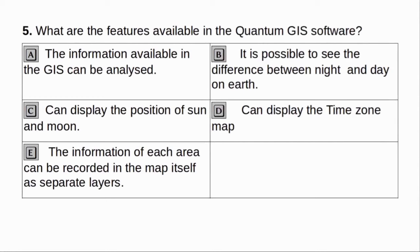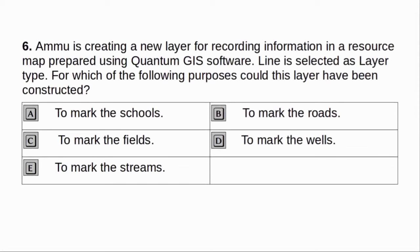What are the features available in the Quantum GIS software? A. The information available in the GIS can be analysed. B. It is possible to see the difference between night and day on Earth. C. Can display the position of sun and moon. D. Can display the time zone map. E. The information of each area can be recorded in the map itself as separate layers. Answer: A and E.